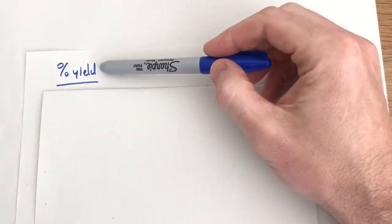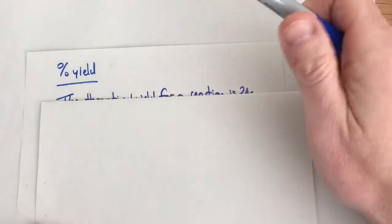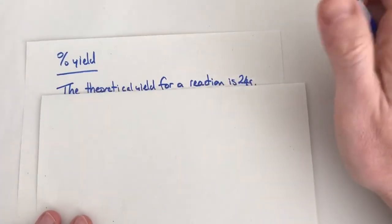In this video we're going to look at how to calculate the percentage yield. Yield is just another word for product, the amount we make. So this is working out a percentage amount that we have made in a chemical reaction. The best way to show you this is to give you an example with some numbers.